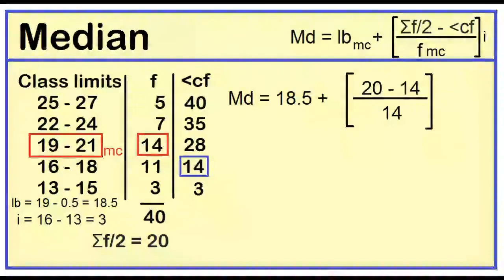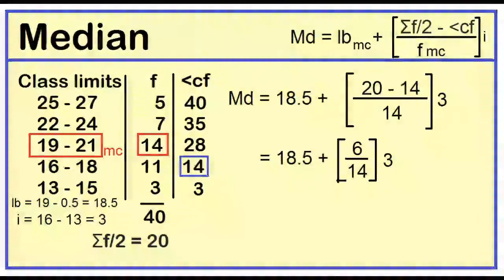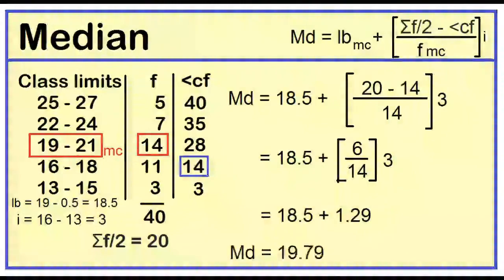Median is equal to 18.5 plus the product of the quantity 20 minus 14, all over 14, and 3. This is equal to 18.5 plus the product of 6 over 14 and 3. 18.5 plus 1.29 is equal to 19.79. The median is 19.79.